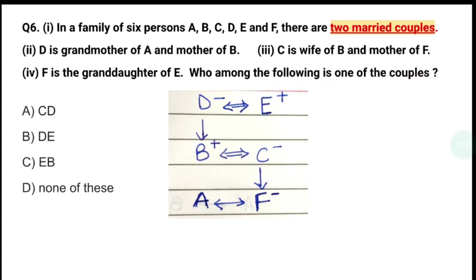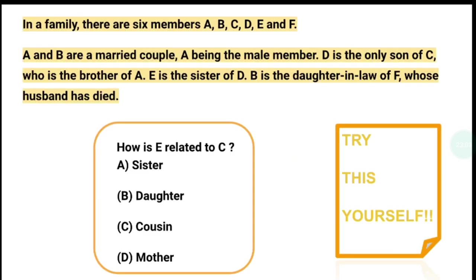I hope that these different types of questions give you some idea about what can come in banking exams for blood relations. So keep practicing these questions. Today's Try This Yourself question you can see on your screen — there are six family members, A and B are a married couple, and some other conditions are given. On that basis, you will have to find the relationship between E and C. I hope you will attempt this question and let me know in the comments. If you like our videos, please like and subscribe to our channel. Thank you so much. Take care.